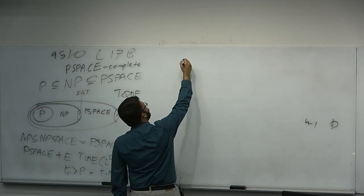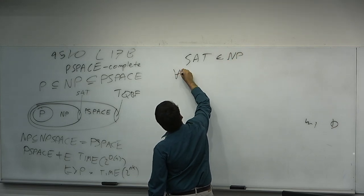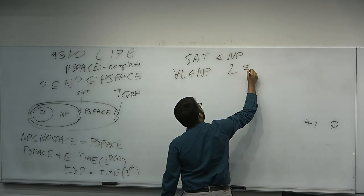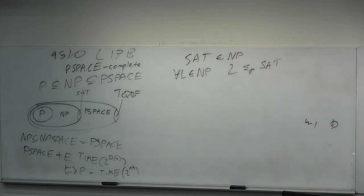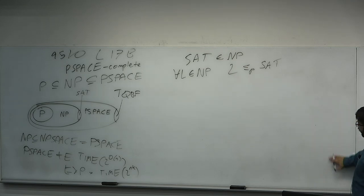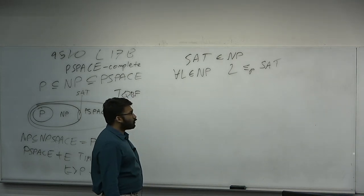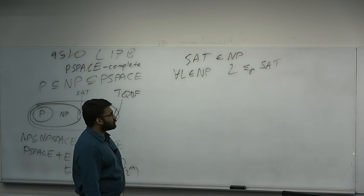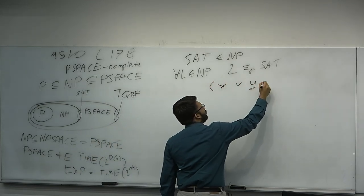So we proved SAT was NP-complete. What that meant was SAT is in NP and for all L in NP, there is a polynomial time reduction from L to SAT. So if a problem had a deterministic verifier or a non-deterministic polynomial time Turing machine, that problem could be mapped to a specific instance of SAT — representing diverse things like Clique, Knapsack, Subset Sum, Sudoku.